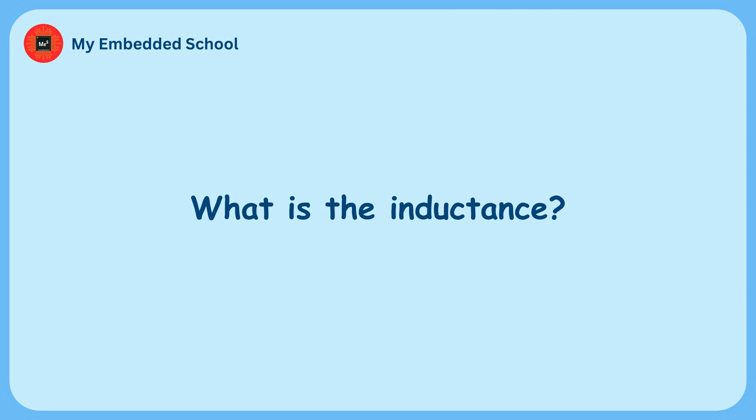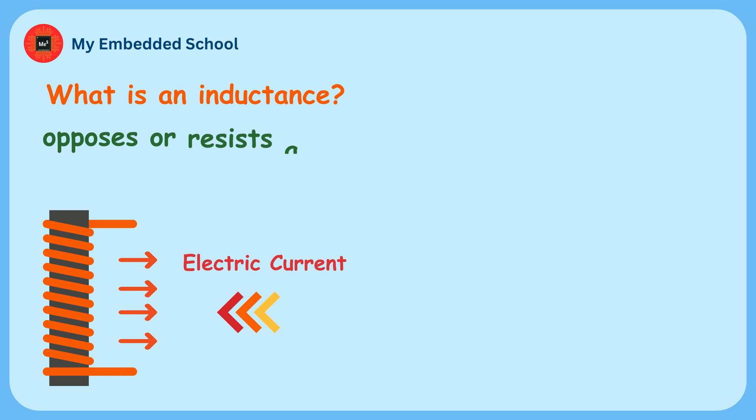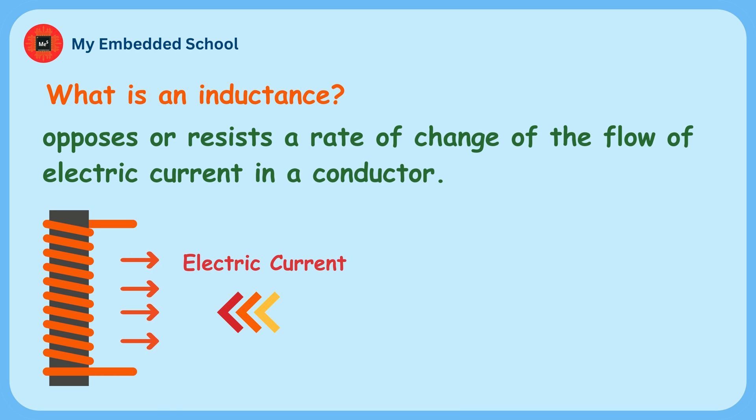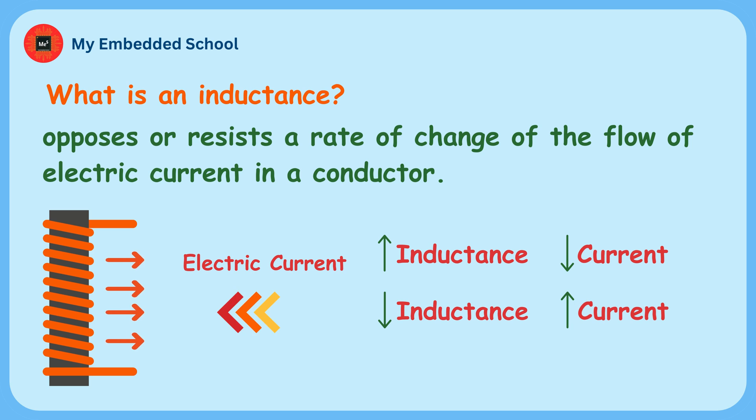What is inductance? Inductance is a property of how much it opposes or resists a rate of change of the flow of electric current in a conductor. The higher the inductance, the lower the current. The lower the inductance, the higher the current.